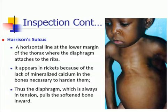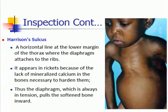Harrison's sulcus is a horizontal line at the lower margin of the thorax where the diaphragm attaches to the ribs. It appears in rickets because of the lack of mineralized calcium in the bones, which is necessary to harden them. Thus, the diaphragm, which is always in tension, pulls the softened bones inward.